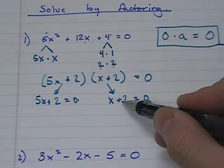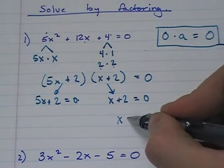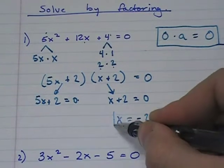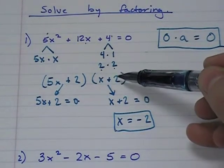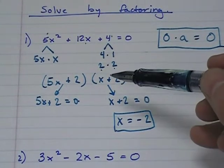Well, this one's the easy one. Move this 2 over and you get x equals negative 2. Well, that makes perfect sense to me because I know negative 2 plus 2 equals zero.